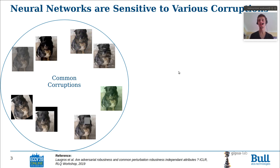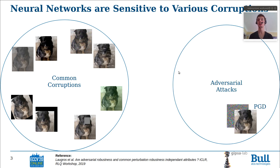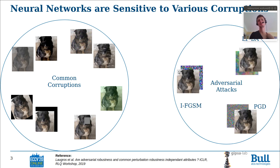Another threat for neural networks are adversarial attacks. Adversarial attacks, contrary to common corruptions, are artificial perturbations. They are especially made by humans so as to fool neural networks. And similarly to common corruptions, there are dozens of adversarial attacks and it is difficult to make a neural network robust to all of them.